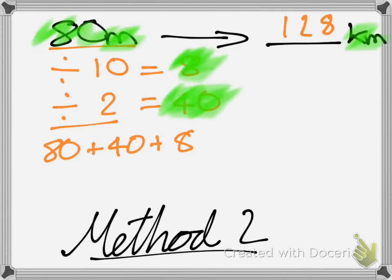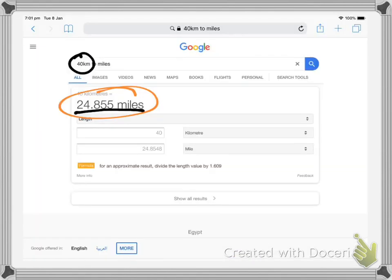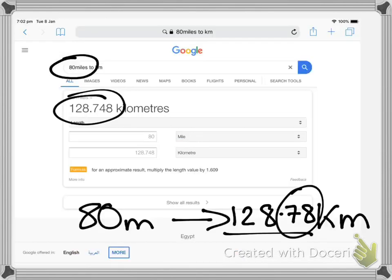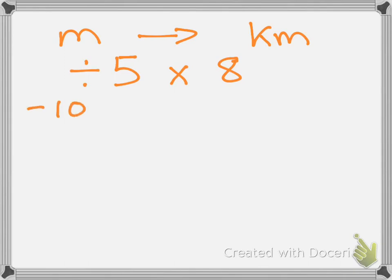That's everything for today's video. I hope you have enjoyed it. Just a quick recap. If you are going from miles to kilometers, method 1, you divide by 5, then multiply by 8. Or you divide by 10, divide by 2, add them both together, and also add the original number.